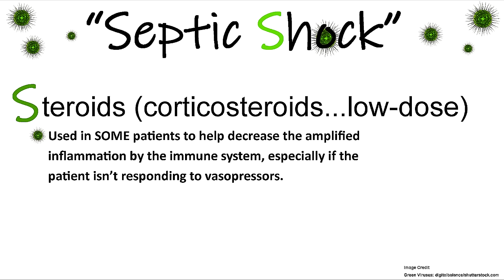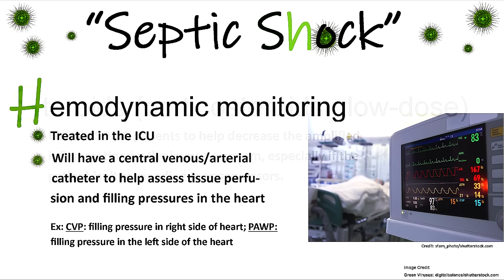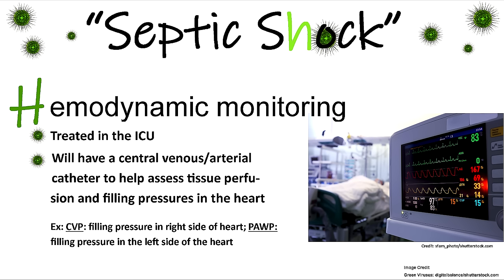S is for Steroids — low-dose corticosteroids may be used in some patients to help decrease the amplified system-wide inflammation caused by the immune response, especially if the patient isn't responding adequately to vasopressors. H is for Hemodynamic monitoring — patients will be treated in the ICU with a central venous arterial catheter to assess tissue perfusion and filling pressures. This includes CVP for the right side and pulmonary arterial wedge pressure for the left side of the heart.